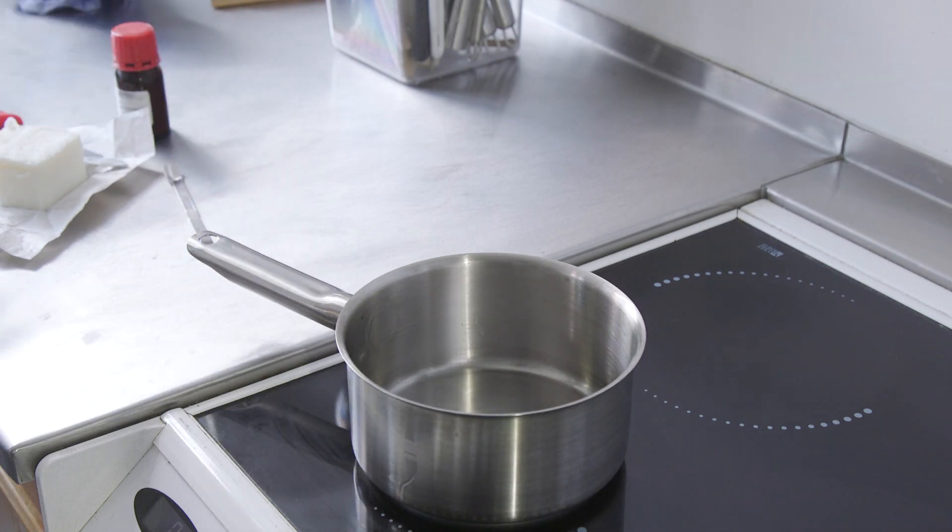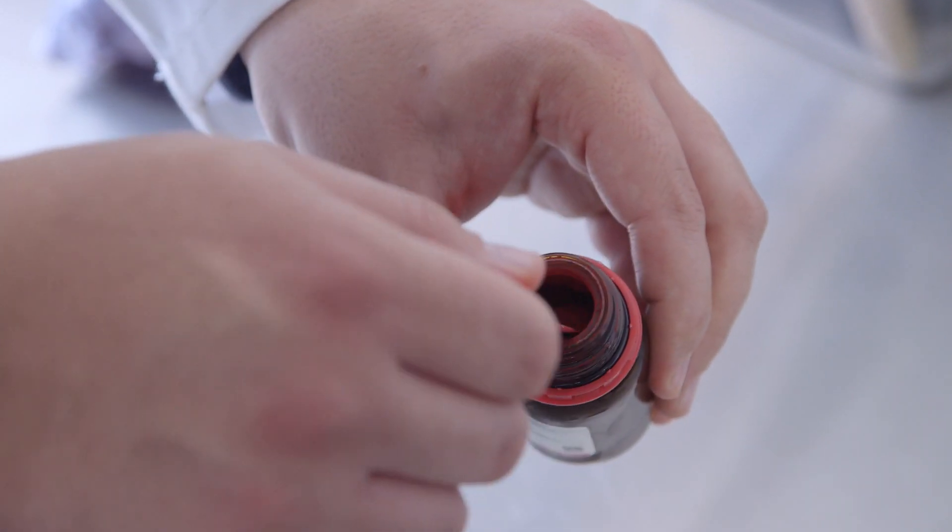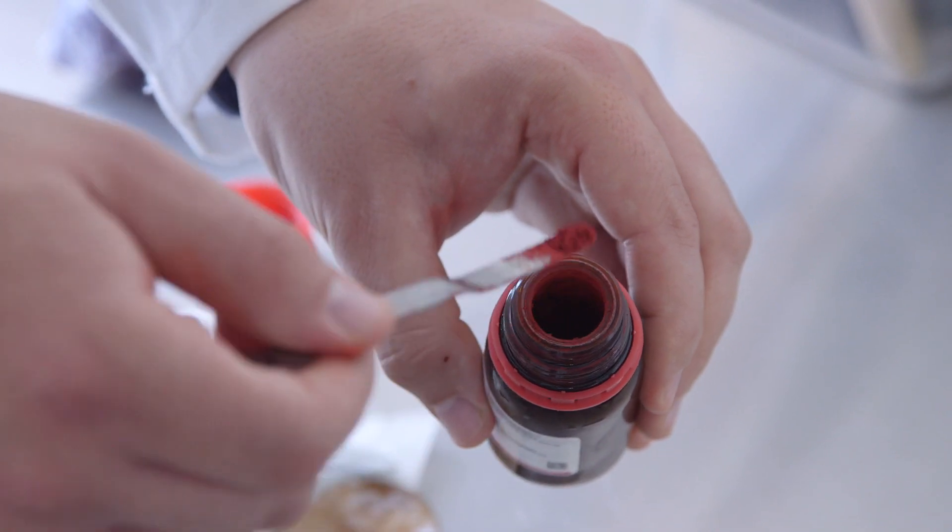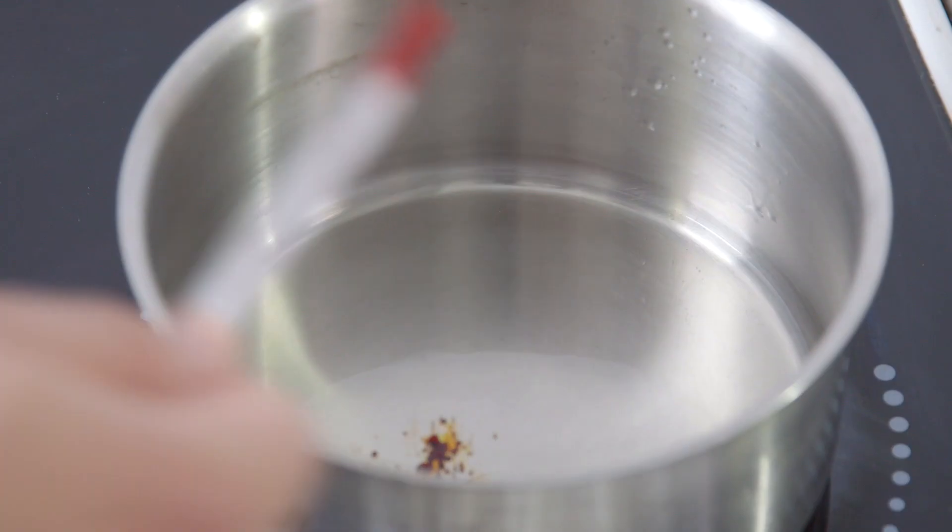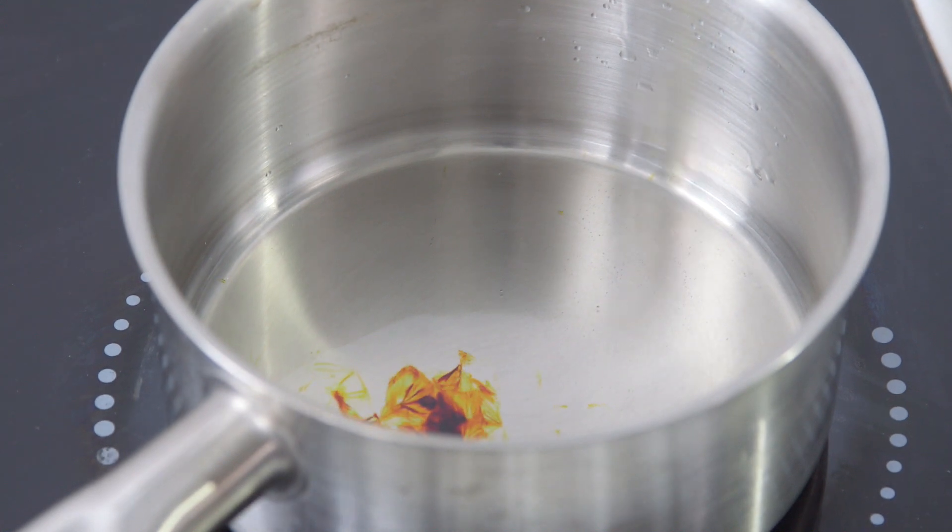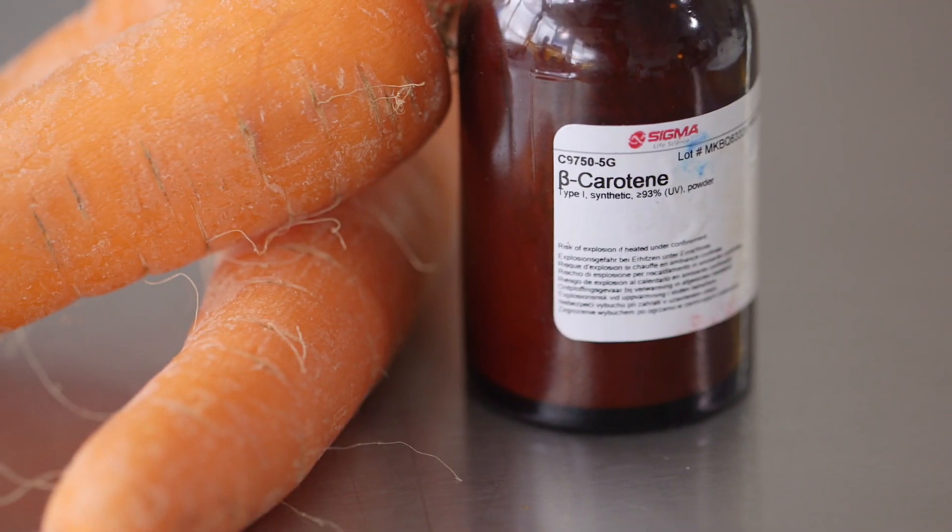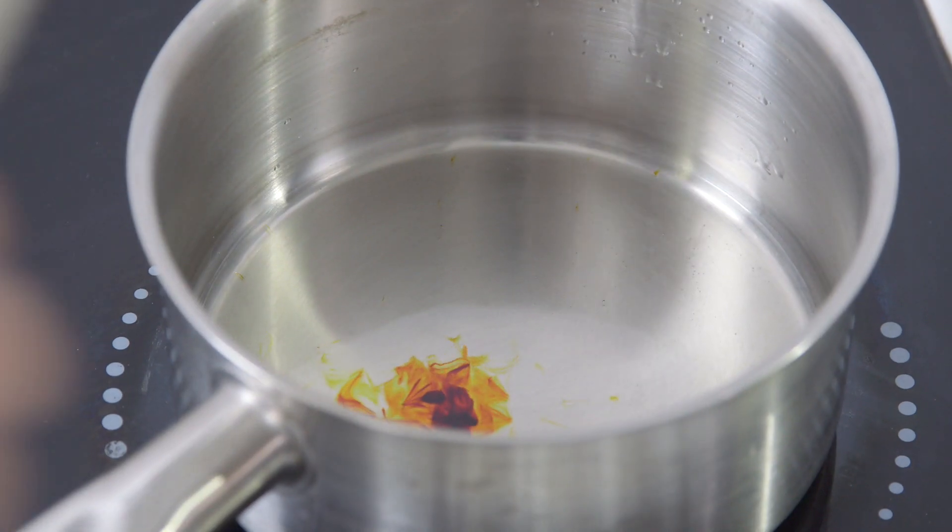To visualize the process, we mix beta-carotene in with the fat. Beta-carotene is a terpene, a highly unsaturated compound that behaves similarly to fats. Beta-carotene is orange, it gives carrots their color, and when it's oxidized, it goes colorless.